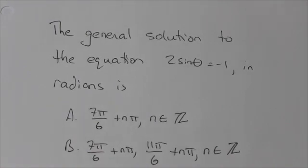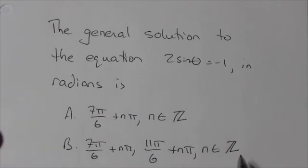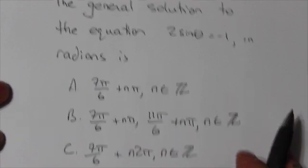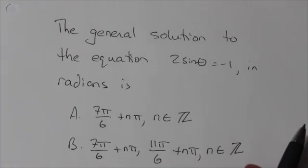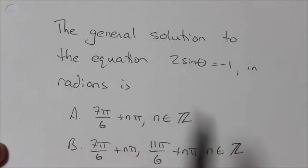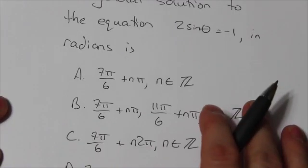Hi, everyone. I'm going to show you how you can use your calculator to answer a trigonometric equation where the answers are given in general form. Here's the question: the general solution to the equation 2 sine of theta equals negative 1 in radians is? Here are our options.